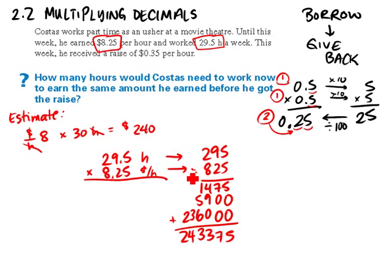We have to give back. As we saw here we borrowed a times 10 and we borrowed a times 100. Well that's one decimal place and this is two decimal places so my final answer will have a total of three decimal places. So I move it over three decimal places and my answer is 243.375.